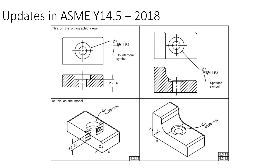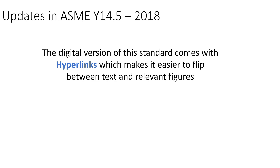The addition of these 3D figures in the standard has made the book much thicker than the 2009 standard. The book has gone from 214 pages in the 2009 version to 326 pages in the 2018 version. The digital version of the standard also comes with hyperlinks, which makes it easier to flip between text and relevant figures.